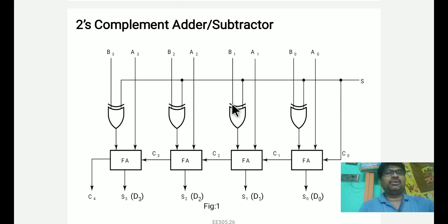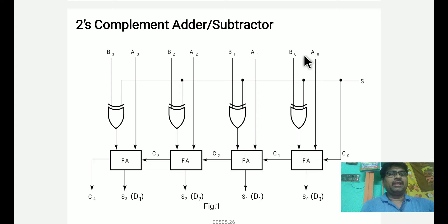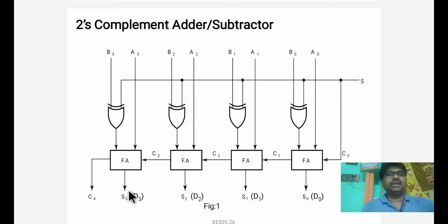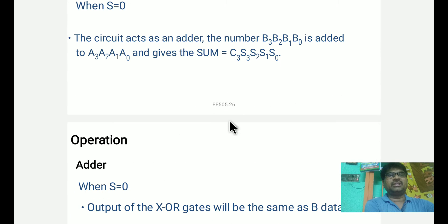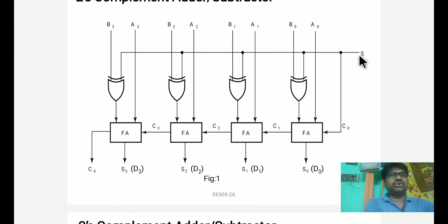B1, B2, B3 through XOR gates. Here is A0, B0, A3, B2, B3, A3, B3 — S3 is the carry for error. For addition, we will neglect the last carry out. For subtraction also, we will neglect the last carry. At the circuit, S is equal to 0.